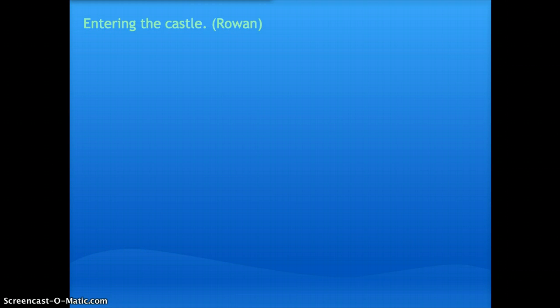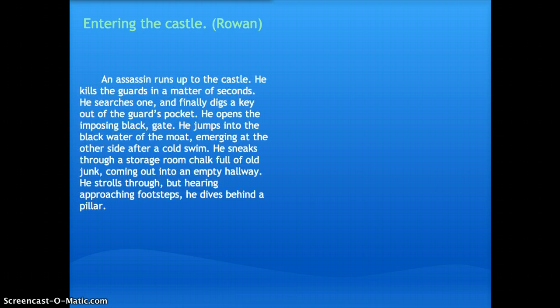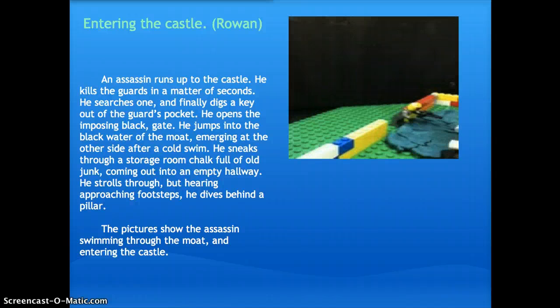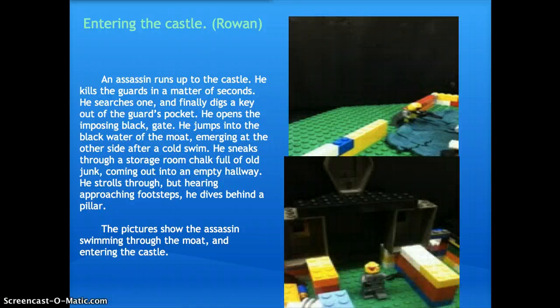Entering the castle, our first analogy slide. An assassin runs up to a castle. He kills the guards and searches one, finally digging a key out of one guard's pocket. He opens the gate and jumps into the moat, emerging at the other side after a swim. He sneaks through a storage room, chock full of old junk, and comes out into an empty hallway. He strolls through, but hearing approaching footsteps, dives behind a pillar.